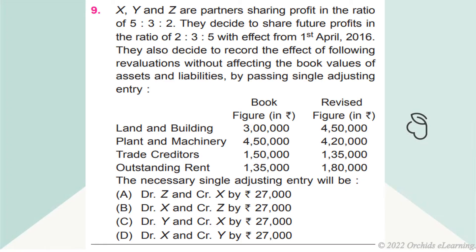Observe the given data. The necessary single adjusting entry will be — Answer b: Dr. X, Answer Z by Rs. 27,000.